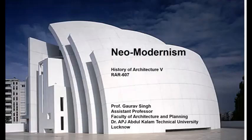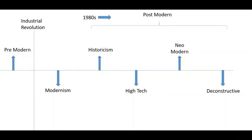Continuing with our timeline, on the left extreme you can see Pre-Modernism, which was before the Industrial Revolution. Then after the Industrial Revolution, we start with Modernism. Modernism started from the 1920s and continues till around the 1980s, from where Post-Modernism started.